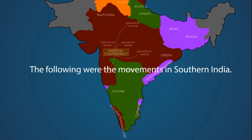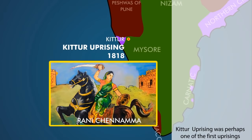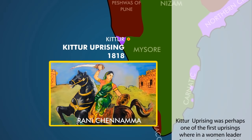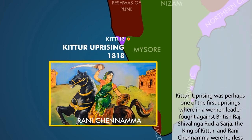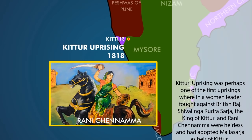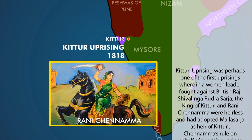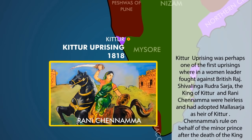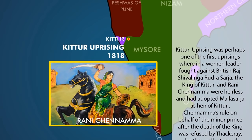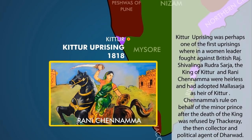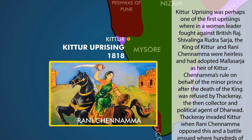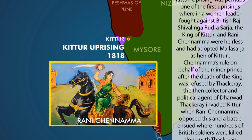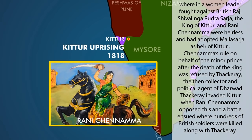The following were the movements in southern India. The Kittur Uprising was perhaps one of the first uprisings wherein a women leader fought against British Raj. Shivalinga Rudra Sarja, the King of Kittur, and Rani Chenamma were childless and had adopted Malla Sarja as heir of Kittur. Chenamma's rule on behalf of the minor prince after the death of the king was refused by Thakri, the then collector and political agent of Dharawar. Thakri invaded Kittur when Rani Chenamma opposed this, and a battle ensued where hundreds of British soldiers were killed along with Thakri.